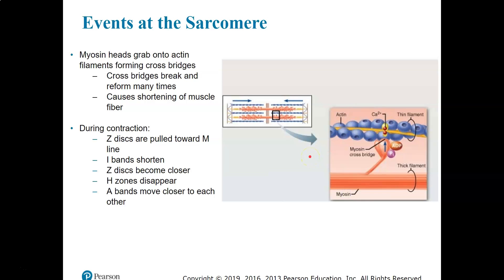At the sarcomere, when the muscle cell becomes stimulated by the nerve cell and we get that action potential, that's eventually going to trigger the release of calcium. This is going to cause these myosin heads to grab onto the actin filaments, forming the cross-bridges, and then pull them.